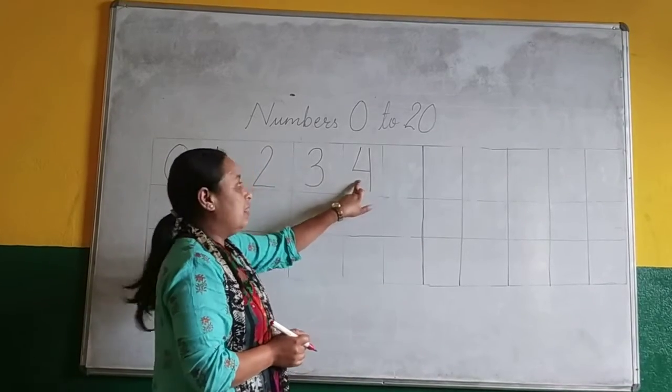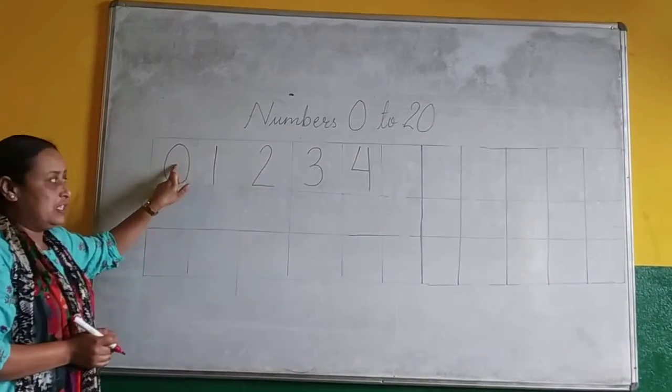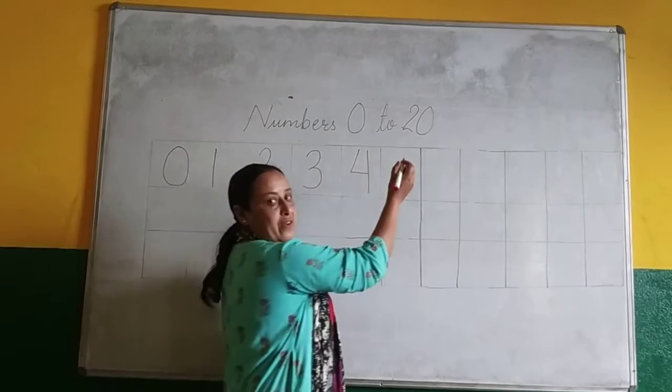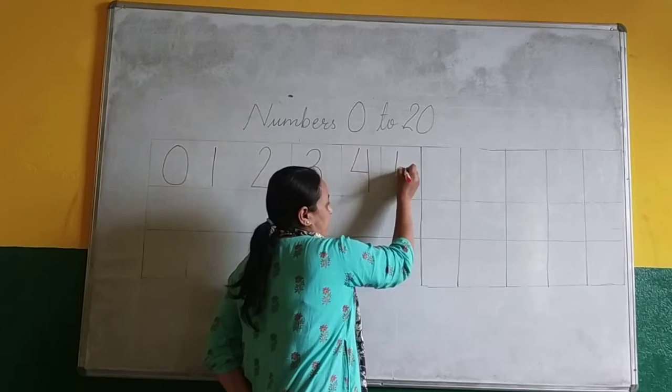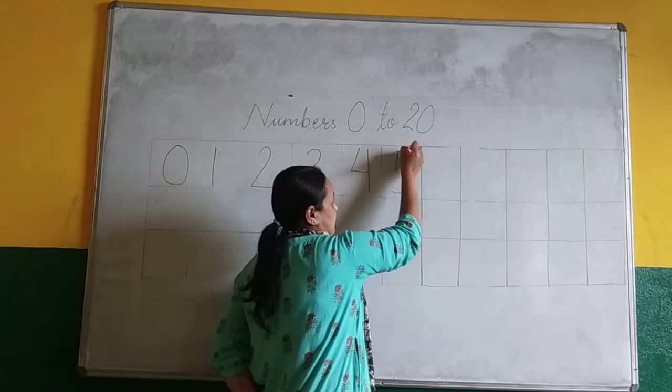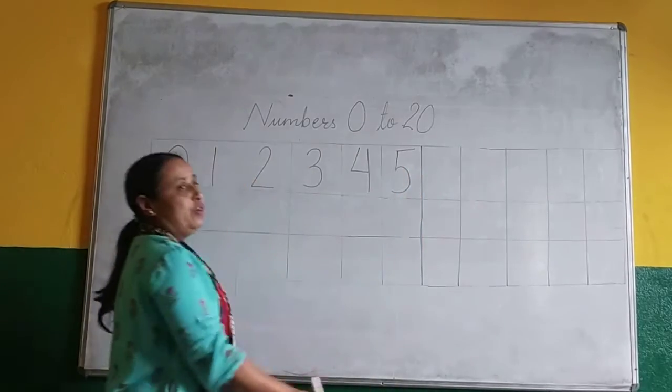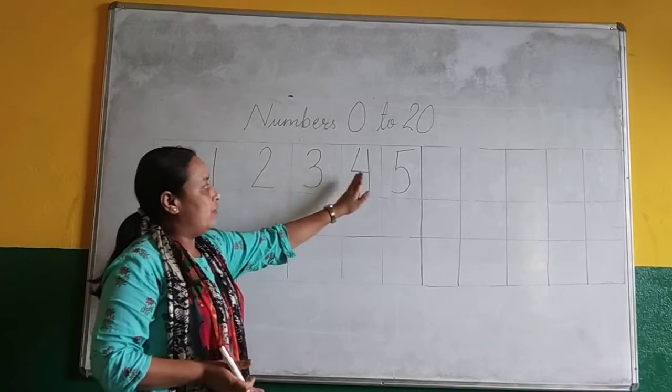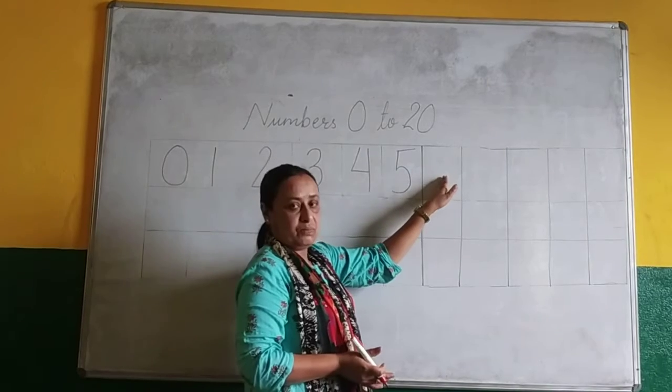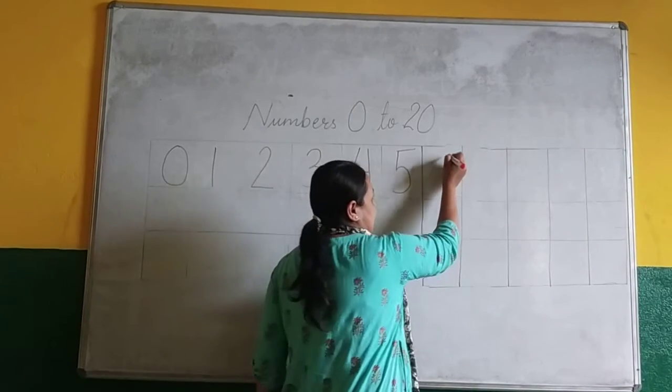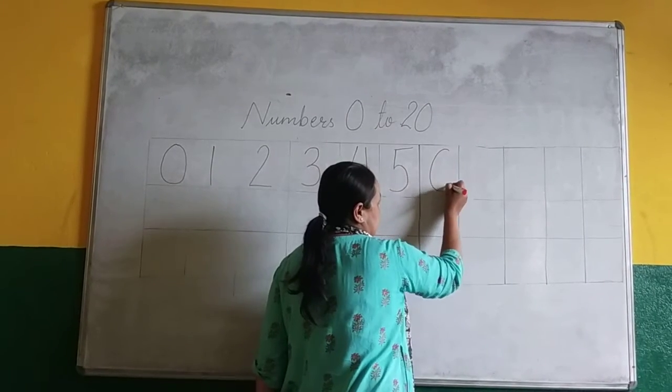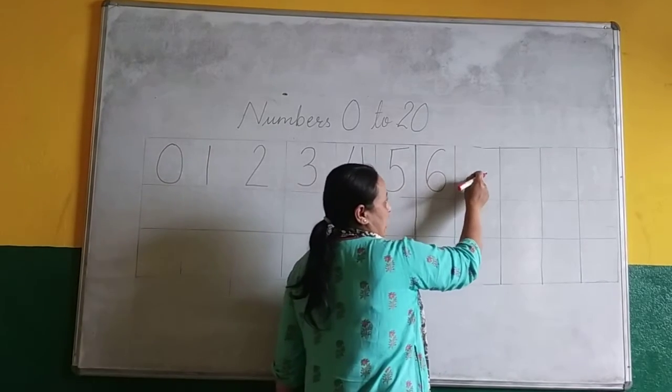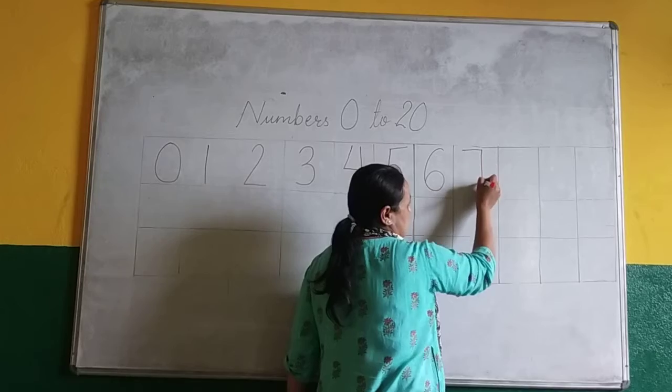What comes after 4? Again count from 0. 0, 1, 2, 3, 4, 5. 5. Write like this. Now again you have to count from 0. 0, 1, 2, 3, 4, 5. What do you have to write here? 6. Number 6.